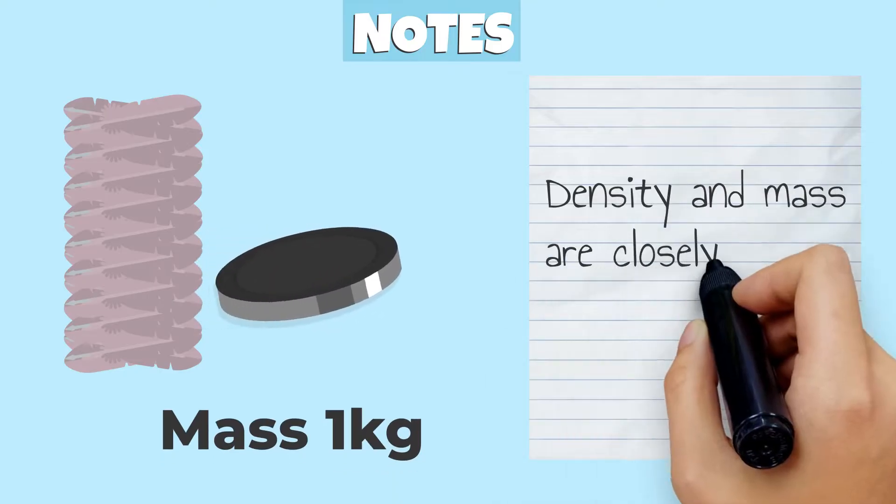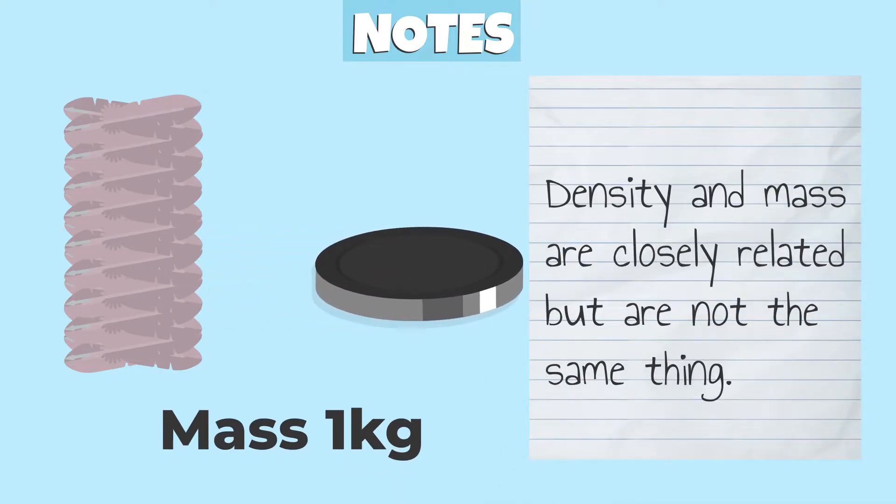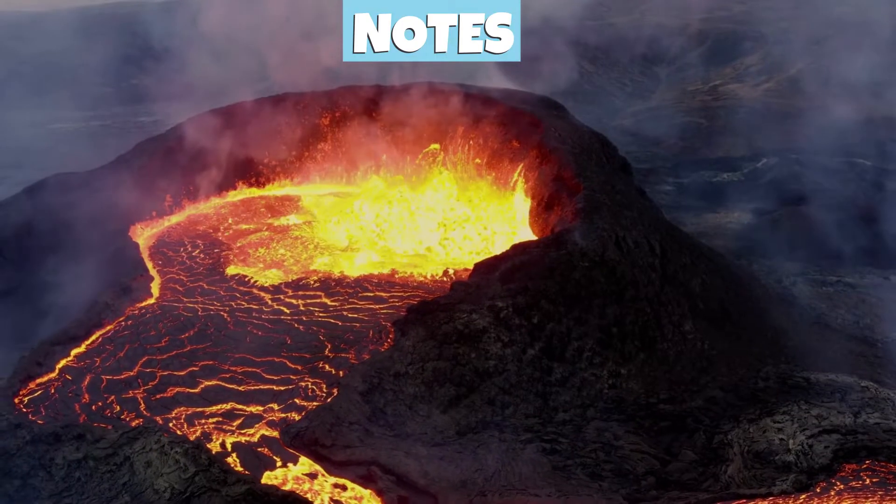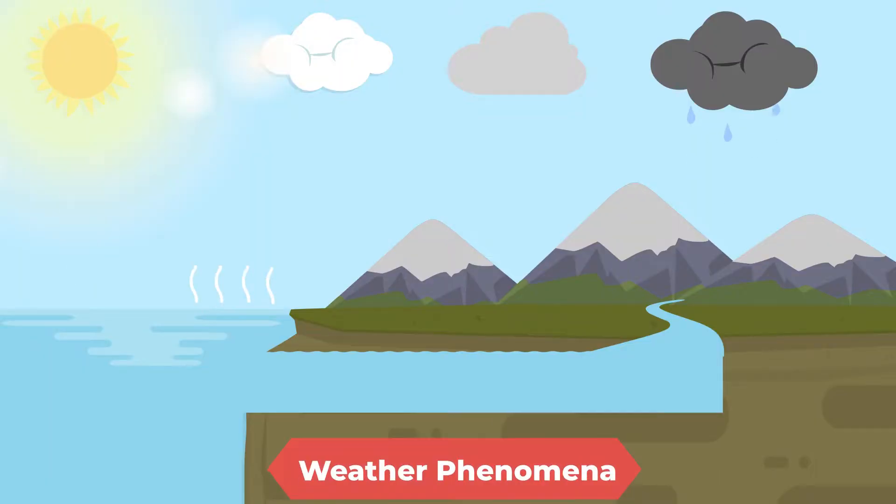Density and mass are closely related, but are not the same thing. Hot air balloons, volcanic eruptions, floating ships, oil spills, and weather phenomenon are all practical applications of less dense objects floating above or rising through denser substances.